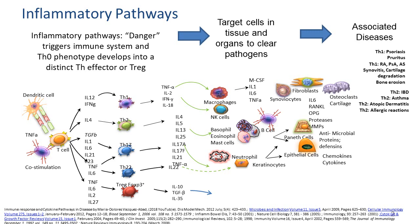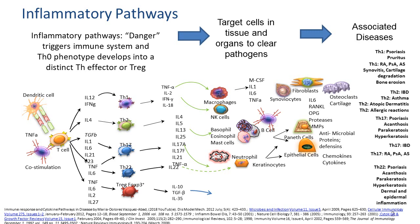TH2 covers everything from food allergies to eczema to mosquito bites. The TH17 profile is associated with the TH22 profile in humans, and the diseases have a component of inflammation — very typically psoriasis, inflammatory bowel disease comprising Crohn's disease and ulcerative colitis, rheumatoid arthritis, psoriatic arthritis, and ankylosing spondylitis. These particular phenotypes are characterized for the TH response.